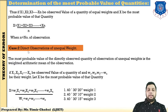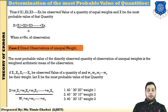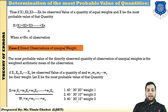Case 2: direct observation of unequal weight. Here the angle is found 1 time by the first observer, so weight is 1. The second observer finds the angle 2 times, so weight is 2. The third observer finds the angle 3 times, so weight is 3. This is an example based on unequal weight.